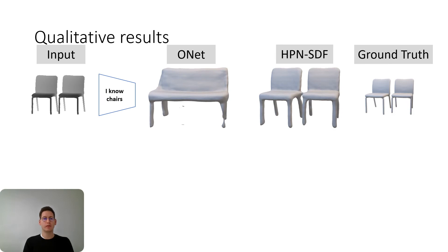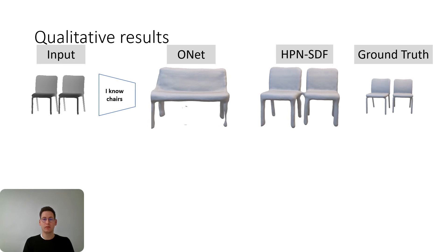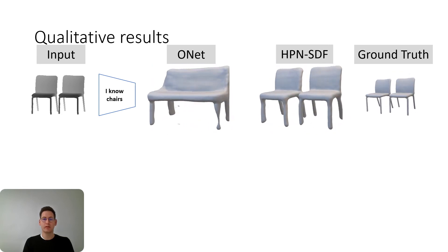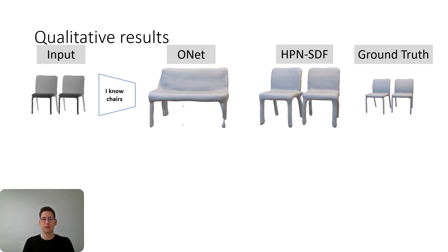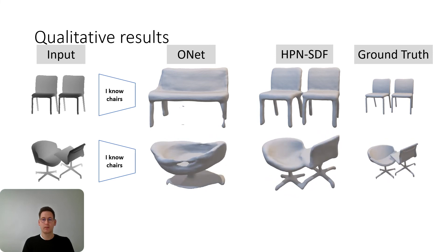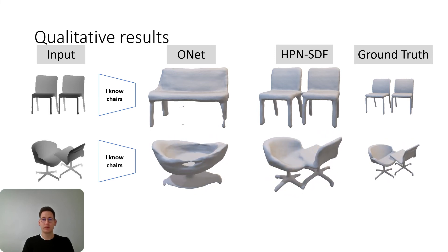Now let's have a look at qualitative results. The network has only seen single chairs during training, and by integrating our local priors we are able to reconstruct this new arrangement of chairs — and this is also the case for other arrangements of chairs. This is great because we don't have to train on all possible combinations of chairs, but can use the information from single chairs to handle all novel arrangements.